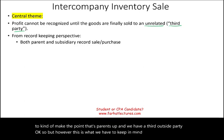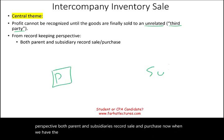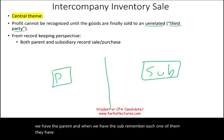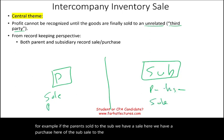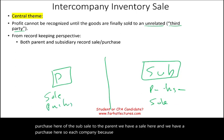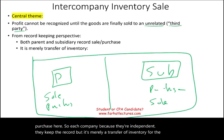From a record-keeping perspective, both parent and subsidiaries record sale and purchase. When we have the parent and the sub, remember each one of them has their own accounting system. If the parent sold to the sub, we have a sale here and a purchase here. If the sub sells to the parent, we have a sale here and a purchase here. Each company, because they're independent, keeps the record — but it's merely a transfer of inventory for the overall group.